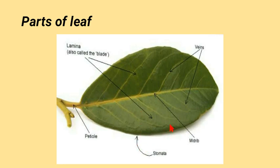Stomata are usually found on the underside of the leaf, depending on the habitat of the plant. But mostly in mesophytes, stomata are found on the underside of the leaves.